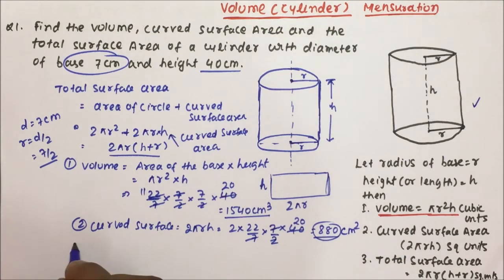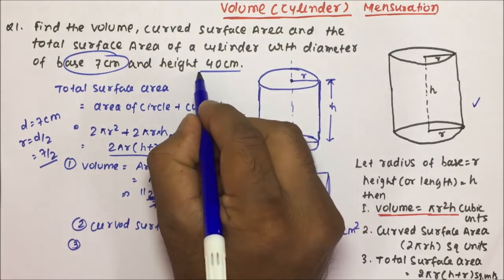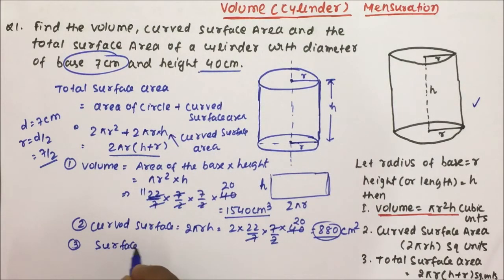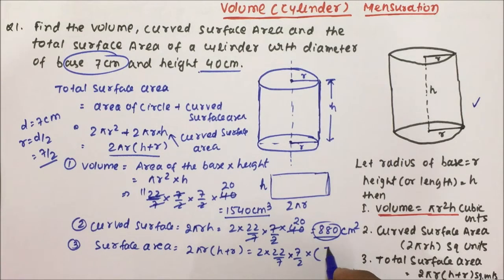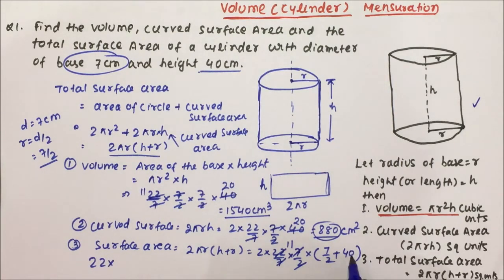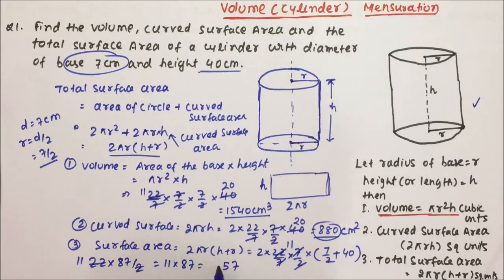Now we have to calculate the total surface area. The total surface area = 2πr(h + r) = 2 × (22/7) × (7/2) × (40 + 7/2). Taking LCM, 40 + 7/2 = 87/2. The 7s cancel, leaving 22 × (87/2) = 11 × 87 = 957. So 957 cm² is the total surface area of the cylinder.